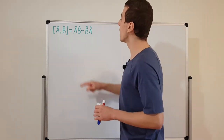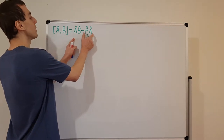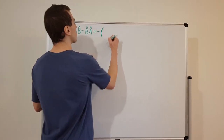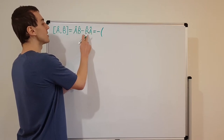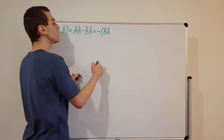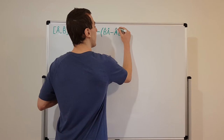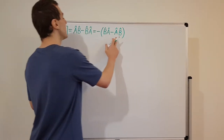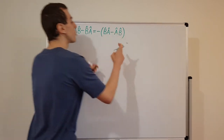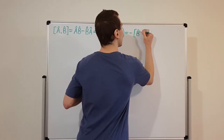Before we move on, I want to show you a very interesting property. I can actually swap the order of these operators if I factor out a minus sign. So if I factor out a minus sign, I get BA minus AB — which is essentially the swapped commutator with a minus sign introduced. Using the definition, I can write this in compact notation as minus the commutator of B and A.